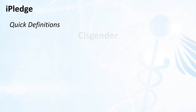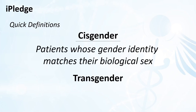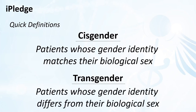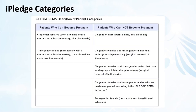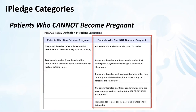Those definitions are for the words cisgender and transgender. The term cisgender refers to those patients whose gender identity matches the sex assigned to them at birth. Transgender describes someone who identifies as a gender different than the sex assigned to them at birth. It's important to understand this because the iPledge program uses these terms in their program materials, including the chart which provides the two iPledge patient categories — patients who can become pregnant and patients who cannot become pregnant.